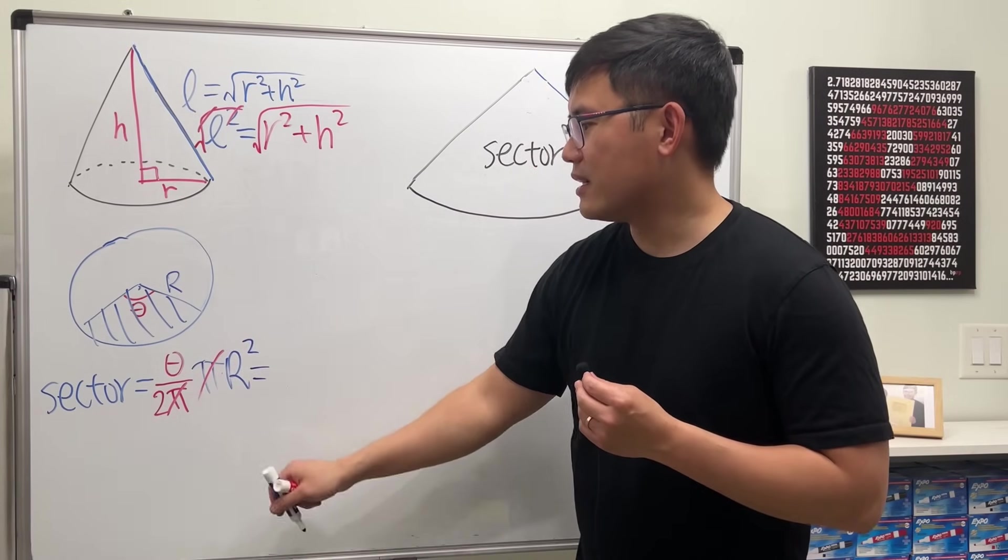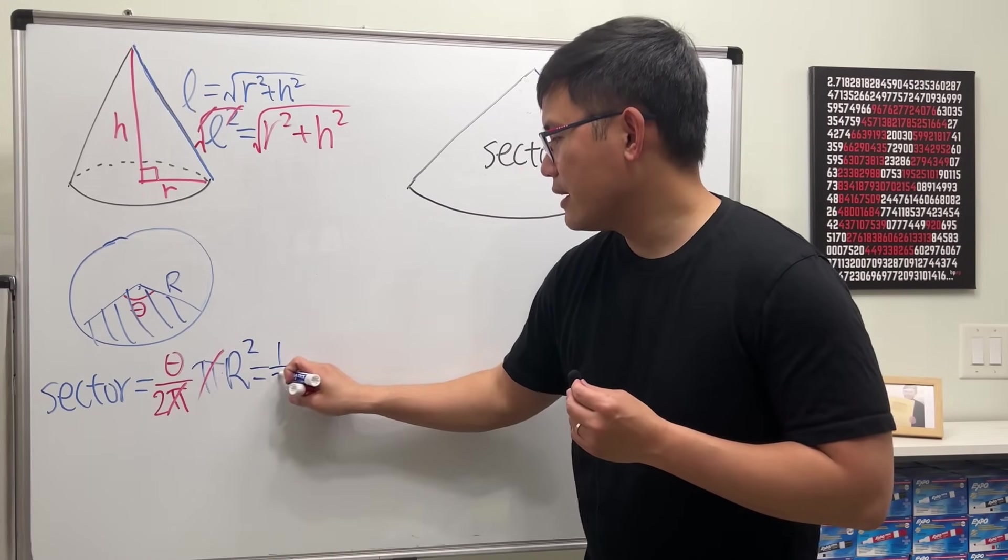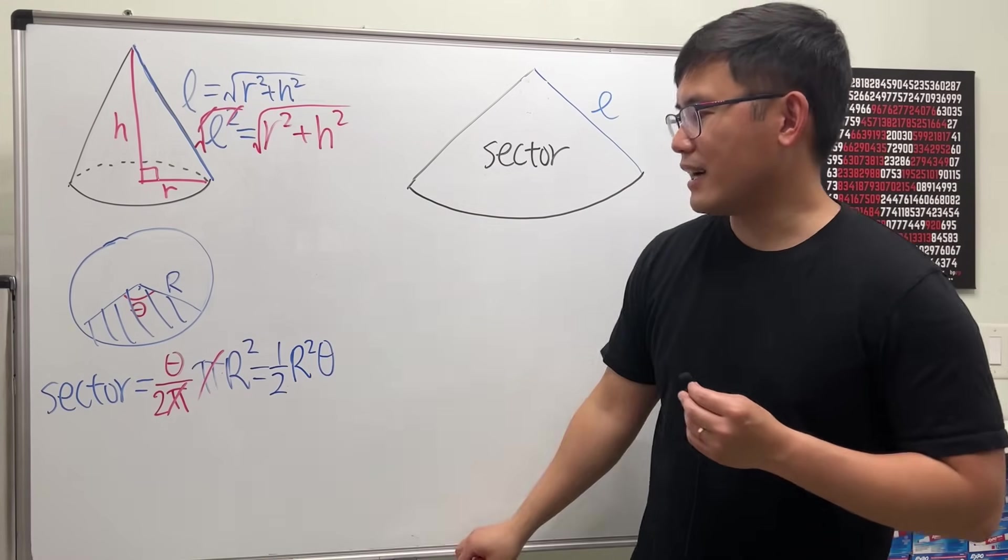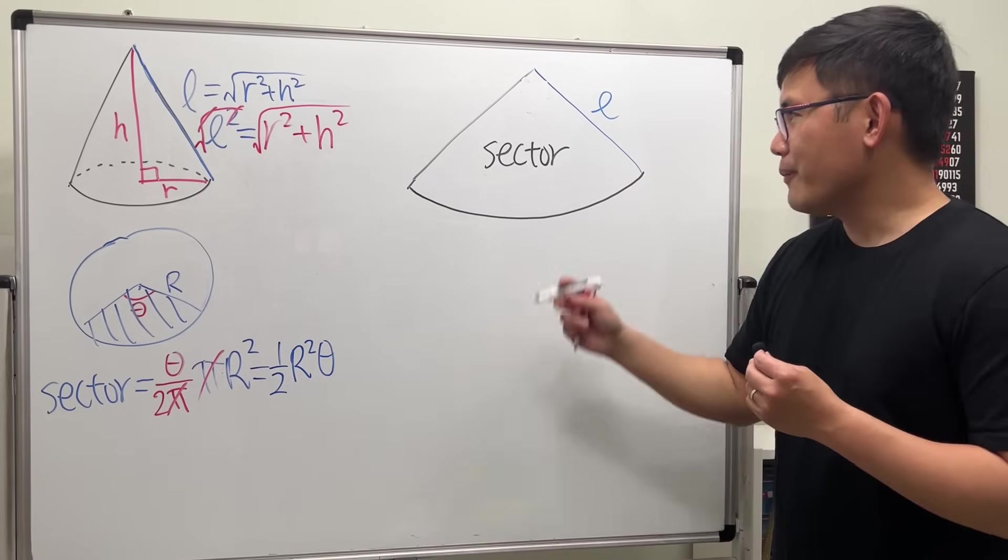So the area of a sector, we have one half, and then let's put on R squared next, and then we have the angle theta.